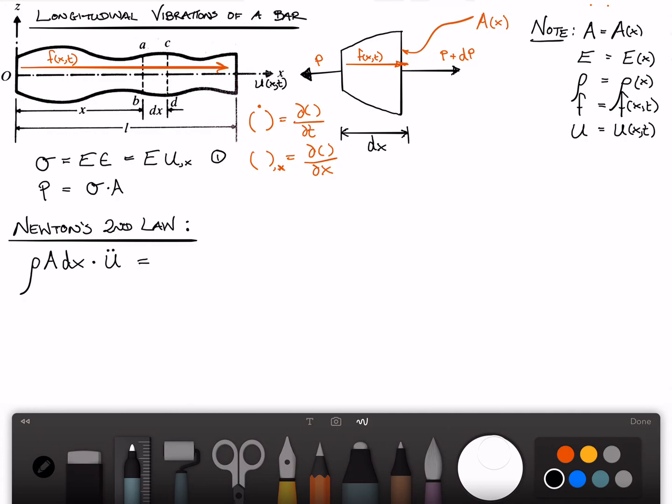And that is equal to the sum of all the forces. The sum of the forces is p plus dp minus p plus f times dx. Because remember, f is a force per unit length. We can rewrite this by canceling the p's as dp. But dp is simply dp dx times dx, and then this is plus f dx.